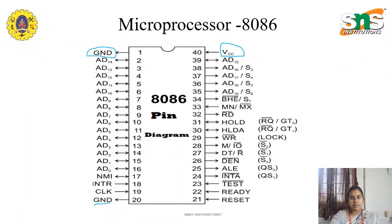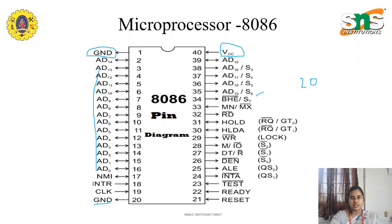We have seen the supply and also the ground. So now we have to transfer the data. We can transfer the data via address and data pins. Here you can see from A0 to A19, so we have 20 address pins — address/data pins. We have 20 address/data pins to transfer the data and the address. Here you can see AD16 to AD19 — data access pins which are used for either data/address transfer or for the status pins. Starting from S3 to S6.